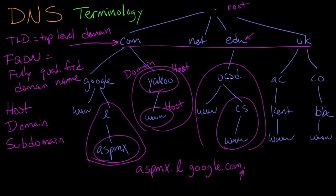either talking about one point in the tree or some point below in the tree. So those are some of the basic terminologies. There's root, we've got TLD or top-level domain, we've got fully qualified domain name or FQDN, and we've got host, domain, and subdomain.